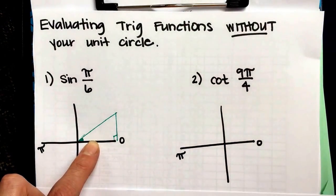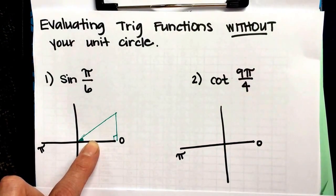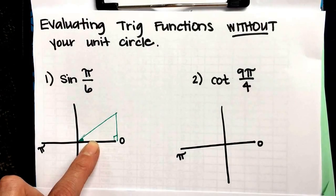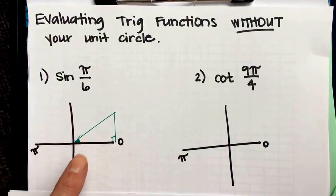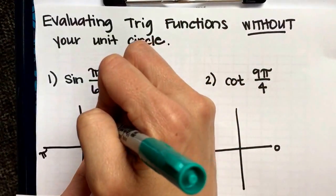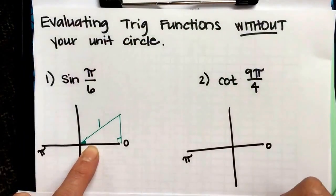And we're going to be using the special right triangles, the 30-60-90 and the 45-45-90 triangles. So I want to be able to label my three sides. The hypotenuse for the unit circle, for all of these, the hypotenuse will always, always, always be one.